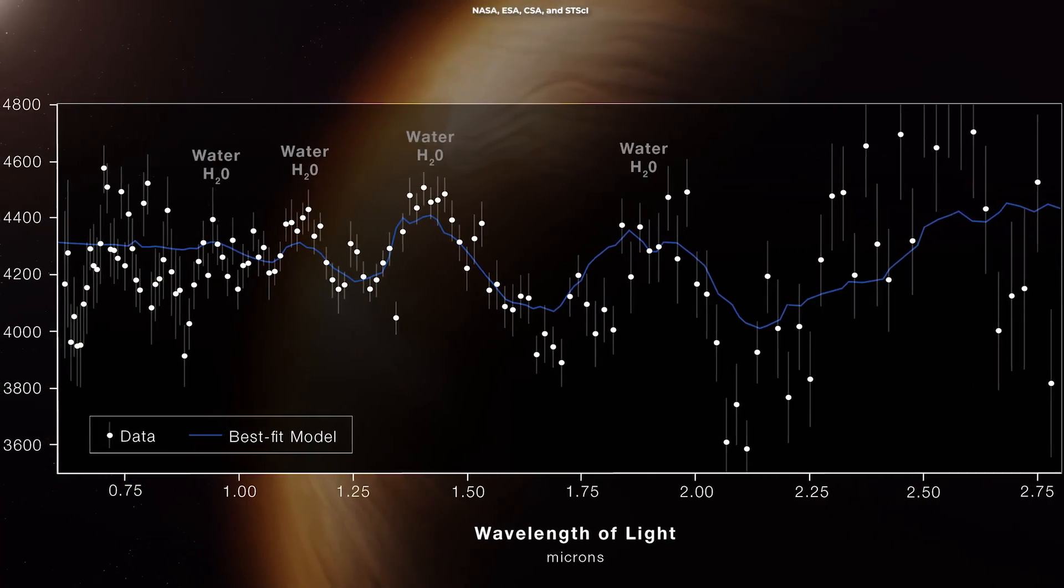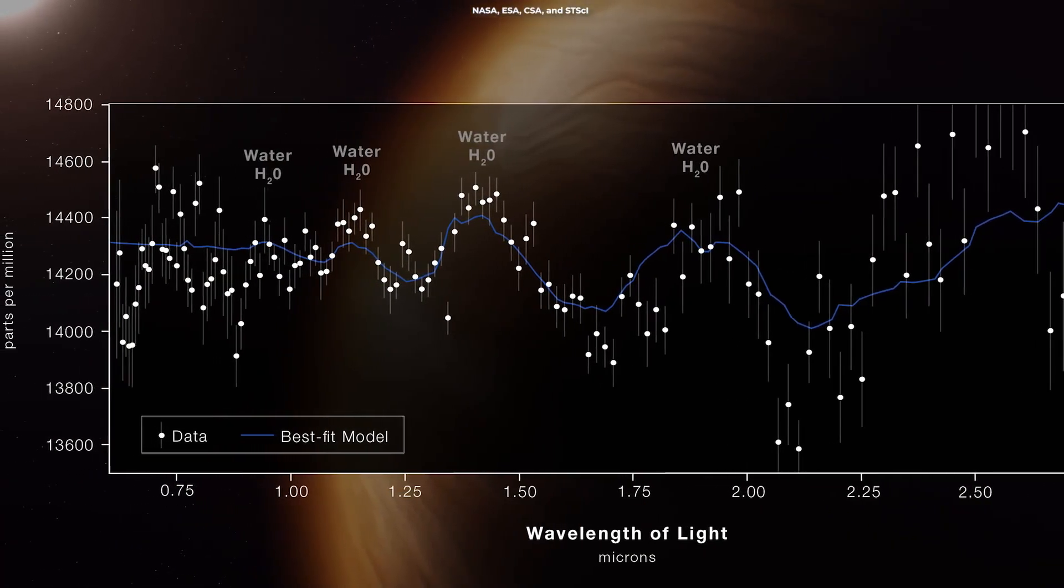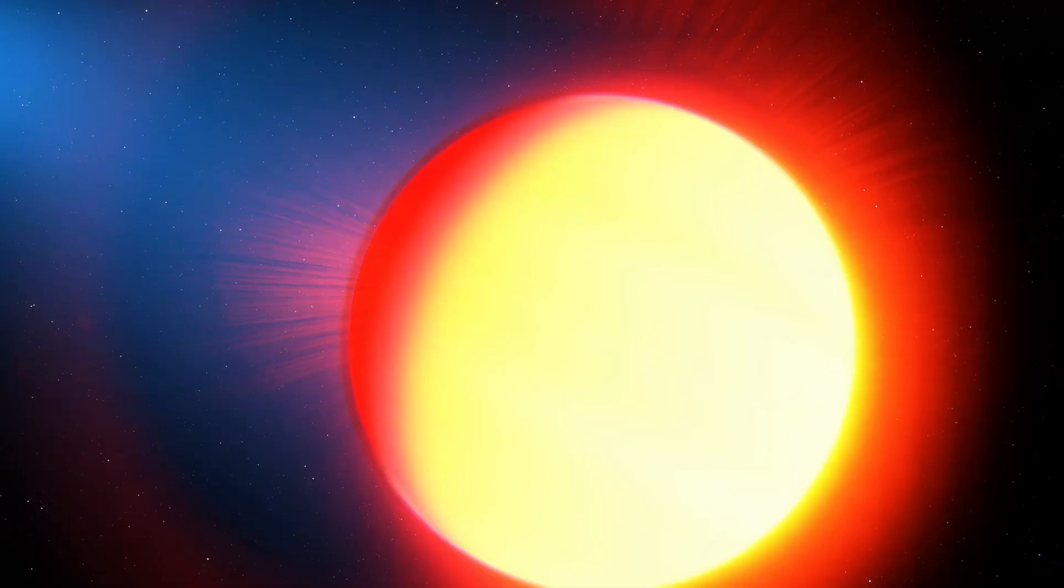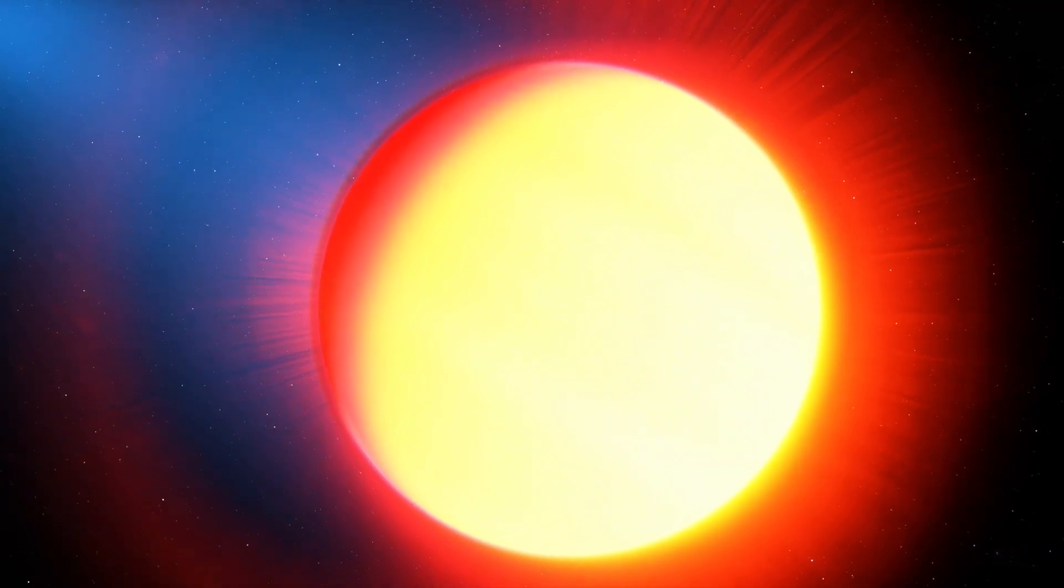The blue line on the graph is a best fit model that takes into account the data and known properties of WASP-96b and its star.